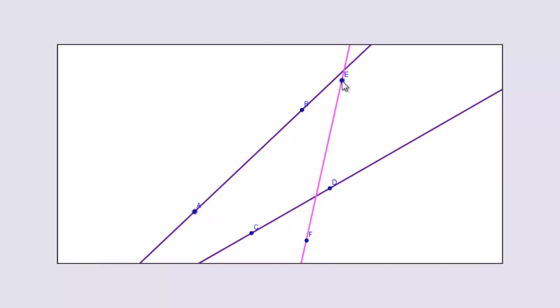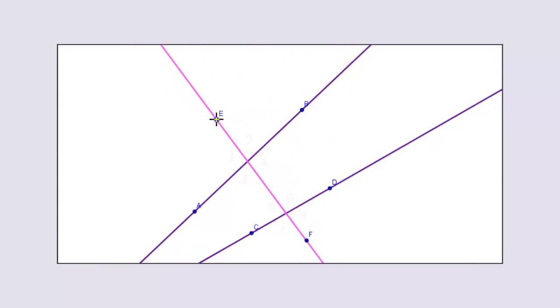When we draw the transversal, it creates eight different angles — four at each intersection point.